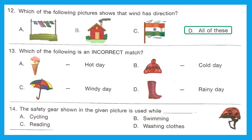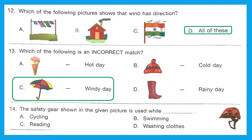Question 13: Which of the following is an incorrect match? Option A — ice cream on a hot day — correct. Option B — cap on a cold day — correct. Option C — umbrella on a windy day — incorrect, because we use an umbrella on a rainy day, not a windy day. Option C is the incorrect match.